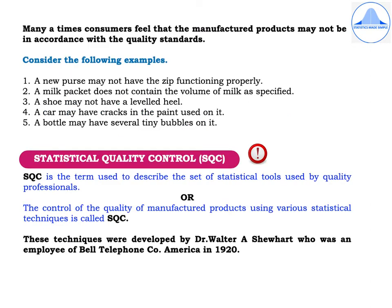Many times consumers feel that the manufactured product may not be in accordance with quality standards. Some examples are: a new purse may not have the zip functioning properly, a milk packet may not contain the specified volume of milk since different packets often have a small variation in ml, a shoe may not have a leveled heel, a car may have cracks in the paint, or a bottle may have several tiny bubbles on it.